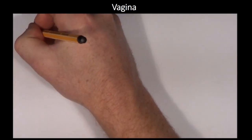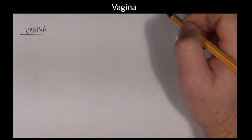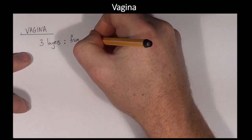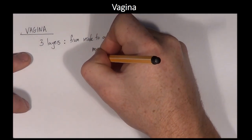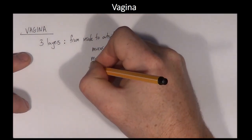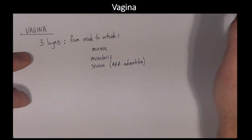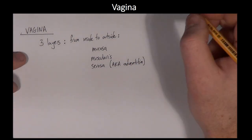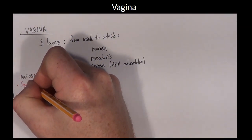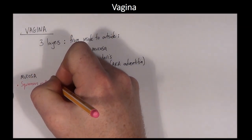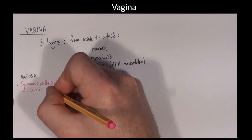The wall of the vagina has three layers: the mucosa, the muscularis, and the cirrhosa. The mucosa consists of layers of squamous epithelial cells. The cow is a little different — she has stratified columnar cells in the cranial vagina with mucous-secreting goblet cells amongst them, but she still has squamous epithelial cells in the caudal vagina.